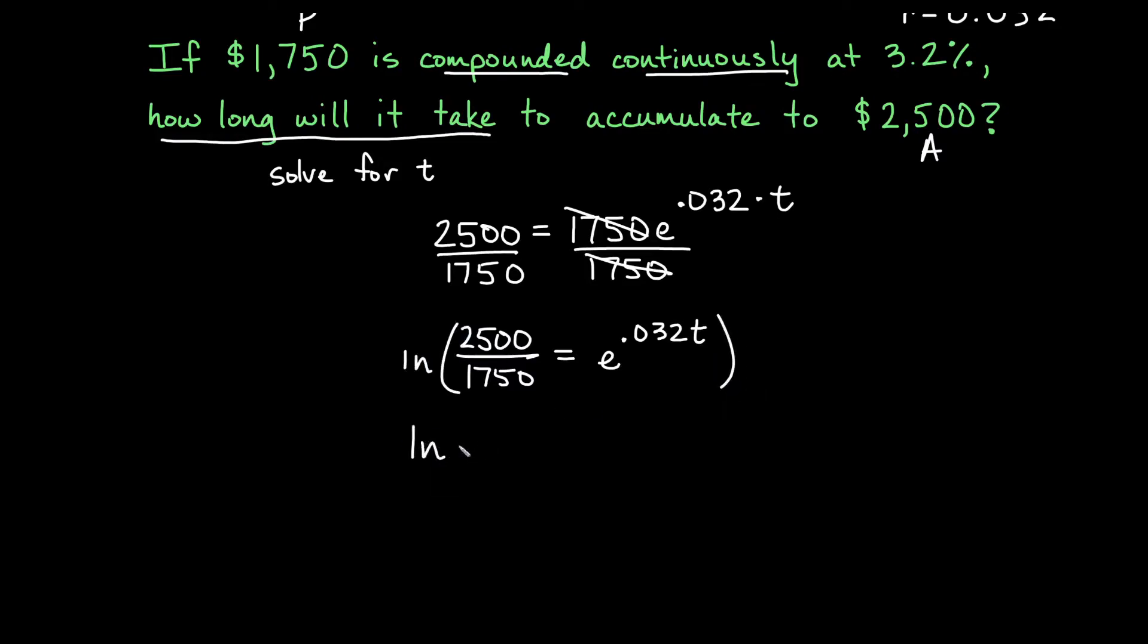So we'll have the natural log of 2500 over 1750 is equal to the natural log of e to the 0.032t. Now remember why we did this? Natural log and exponential base e are inverse operations. This is an exponential base e. This is a log base e. They undo one another.